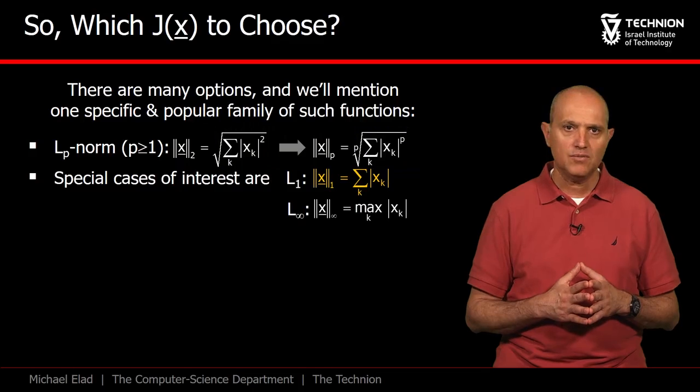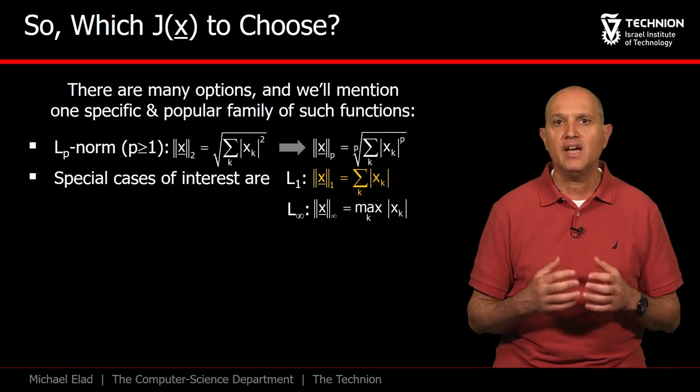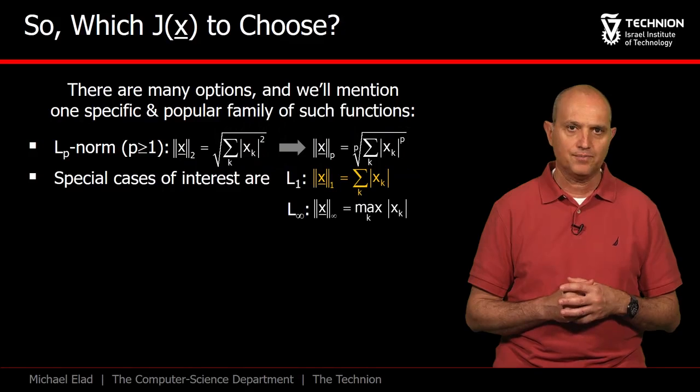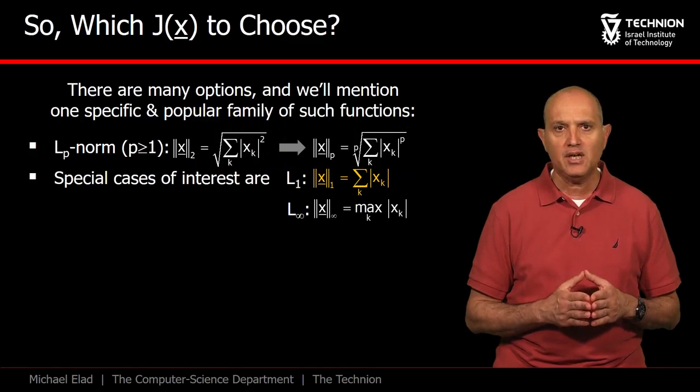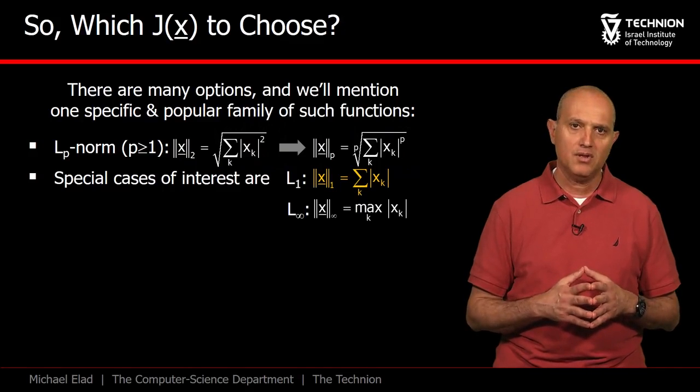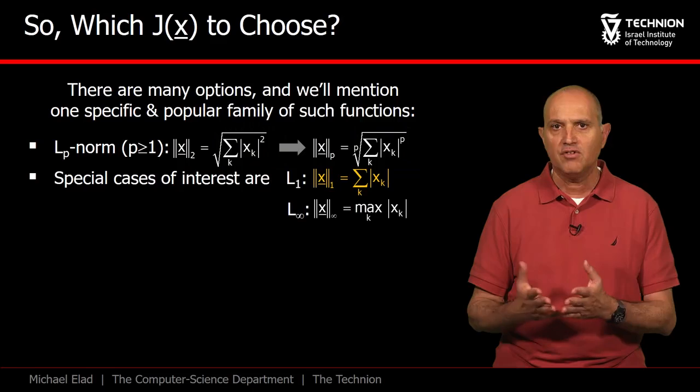A special case of interest is obtained when p equals 1, leading to the L1 norm, which sums the absolute values of the entries of the vector. A second special case is obtained when p goes to infinity. Then we get the max norm that chooses the maximal absolute entry.